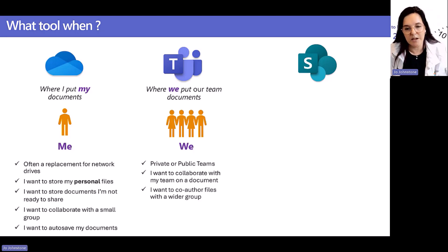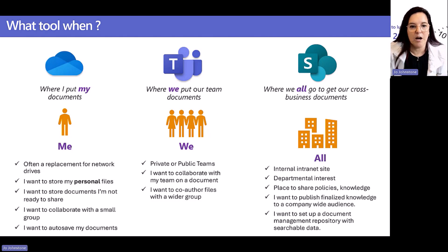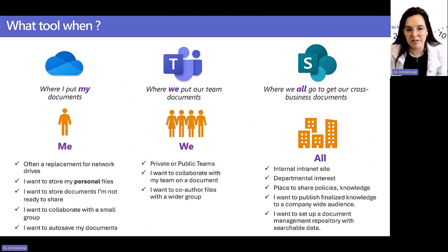It's also where all my documents are auto-saved. I might start a document in OneDrive and then move it to Teams - the 'We' space - where my team is going to collaborate and communicate on it, using tools like co-authoring so my team can add text or comments. Once that's finished, I might move it to the 'All' section - where it becomes a publicly-facing document available to a big department or the entire organization. This is usually the finished article, where I want people to find the data, with retention policies and hopefully a clear owner.